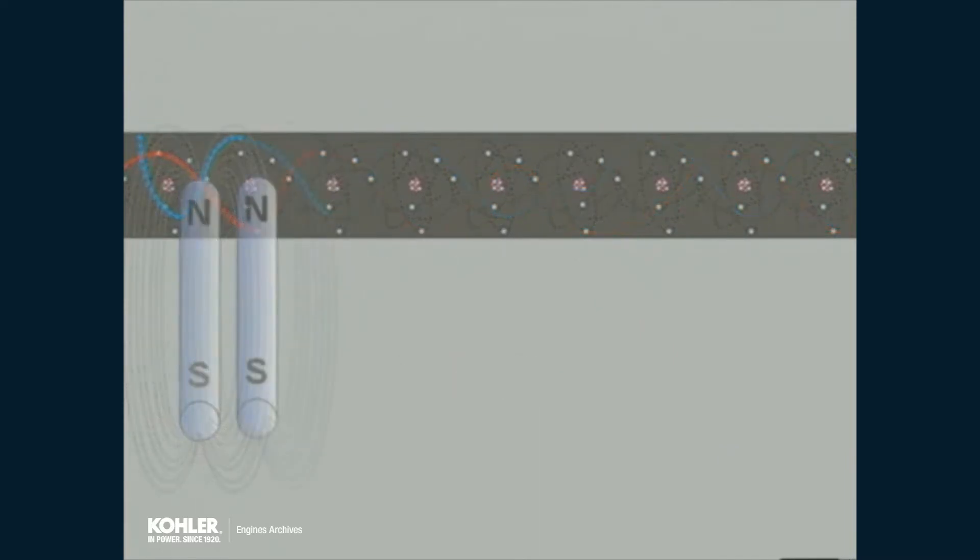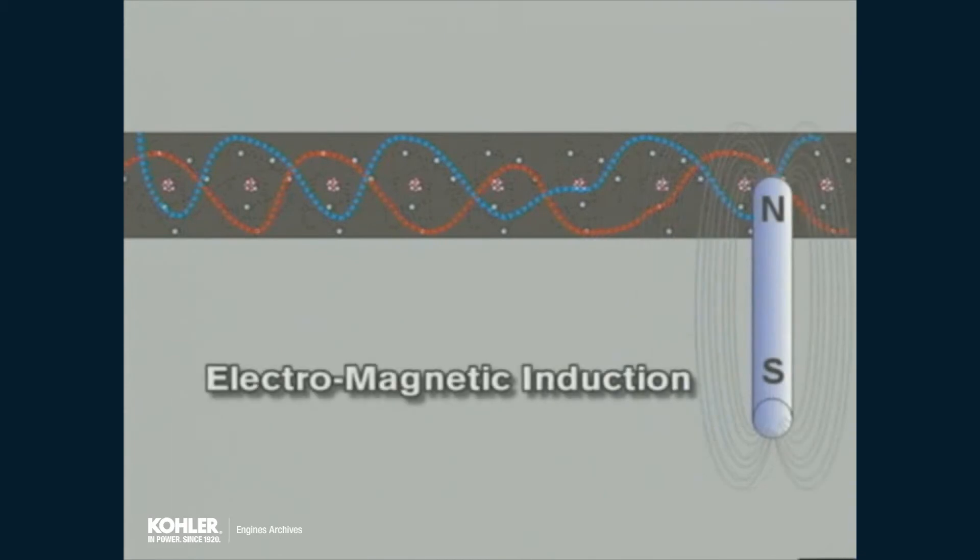If a conductor enters a magnetic flux field, the magnetic force overcomes the attractive force of the atomic nuclei. The electrons leave their orbit and begin moving through the conductor. This phenomenon is known as electromagnetic induction.